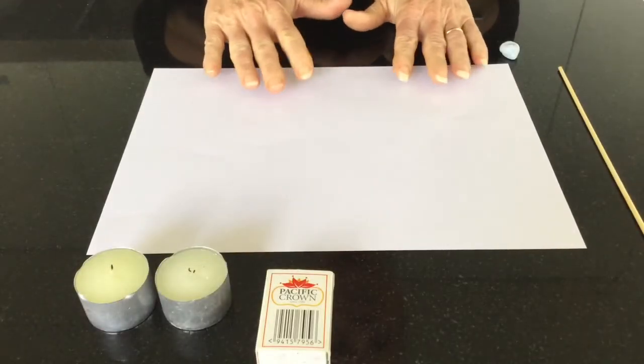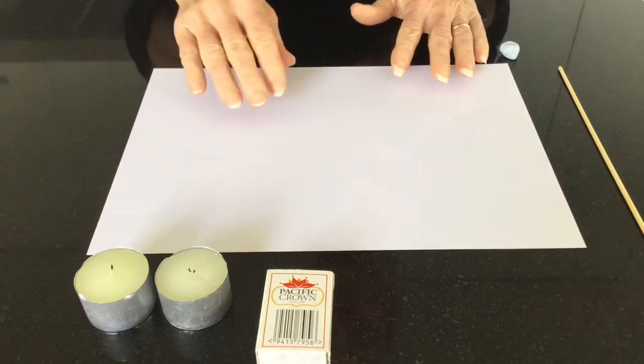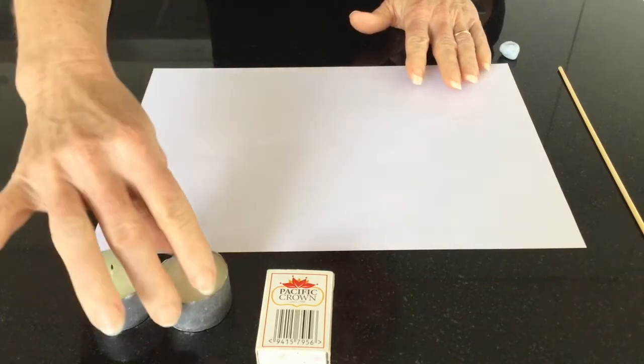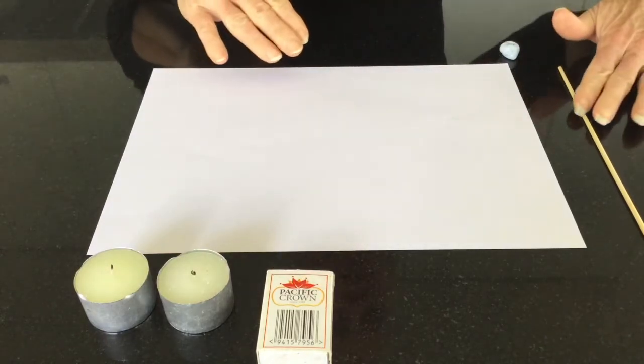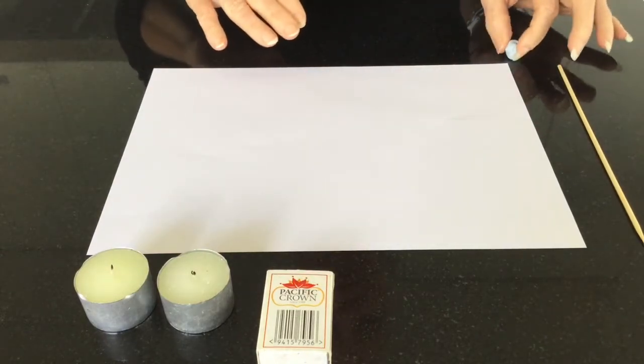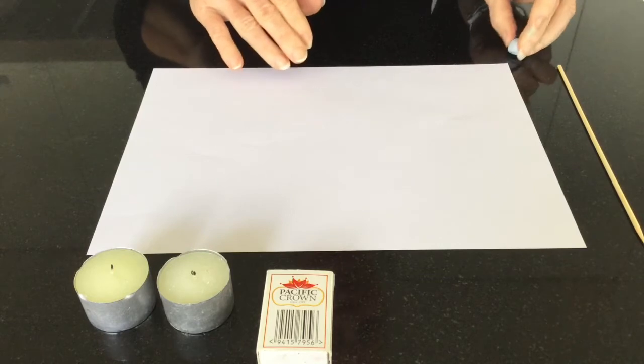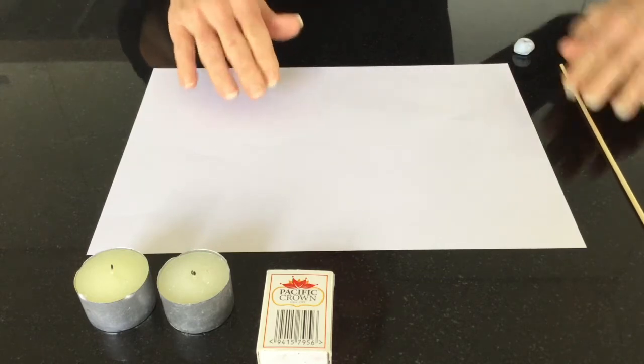The next activity is relatively simple again, but you might need some adults to help with lighting the tea light candles. We've got two of those, our matches, a skewer, a little ball of blue tack or you might have plasticine or just something that will hold this steady.